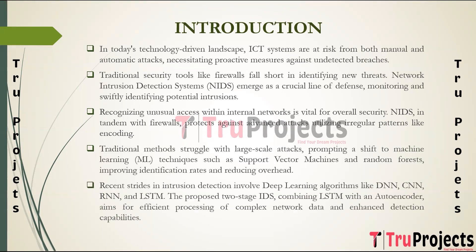Highlighting recent advances in intrusion detection through deep learning, the project introduces a two-stage deep learning-based intrusion detection system leveraging models like DNN, CNN, RNN, and LSTM. The system combines LSTM with an autoencoder to enhance detection accuracy. The primary objective is to present a robust IDS that can adapt and efficiently process intricate raw network data, ensuring effective and precise detection performance.